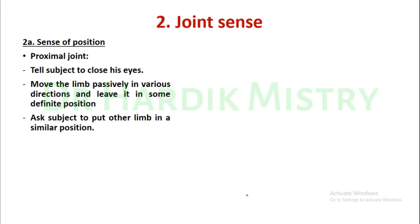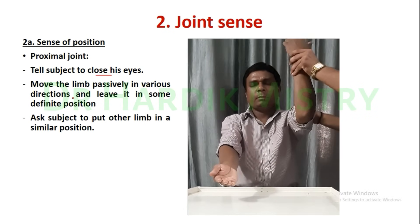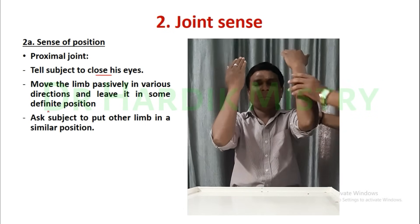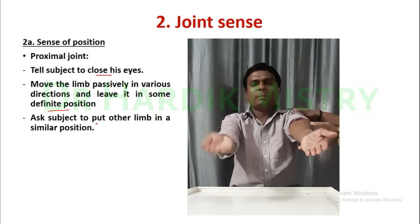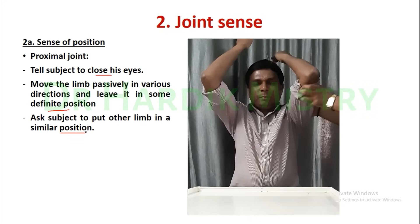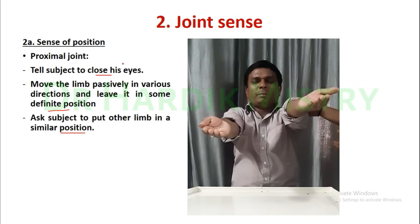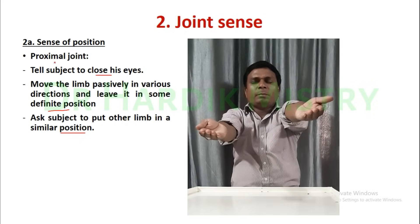Now the second part is the joint sense. First, sense of position for the proximal joint. Tell the subject to close his eyes. Move the limb passively in various directions and leave it in some definite position. Ask the subject to put the other limb in a similar position. This is how you check the sense of position in the joint sense for the proximal joint.